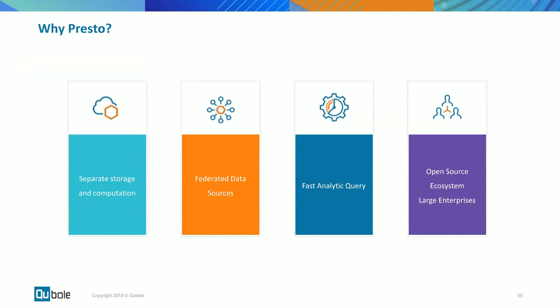From a high-level open source perspective, here's why Presto is the best solution in the cloud for analytics. First, storage and computation are separate — you can scale them independently. Sometimes you only need a very small cluster for light sporadic workloads; sometimes you need a large cluster for heavy workloads. They can all sit on top of the same dataset in the data lake concept — everything in cloud storage.